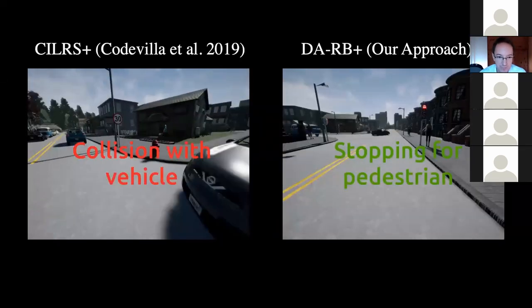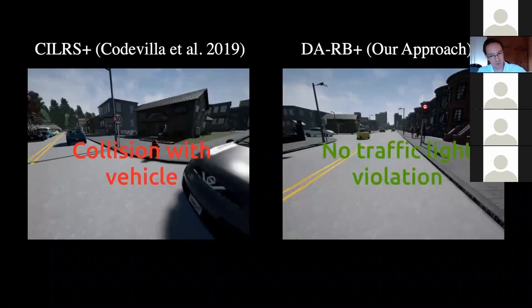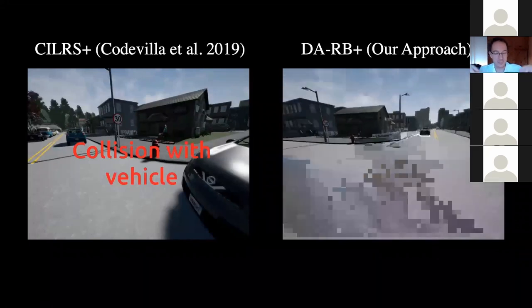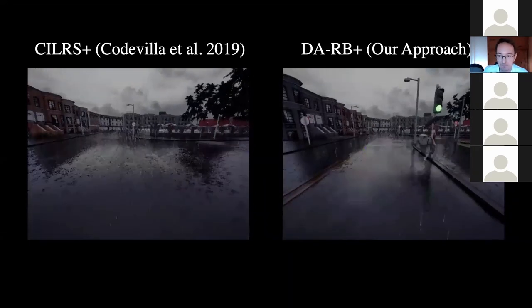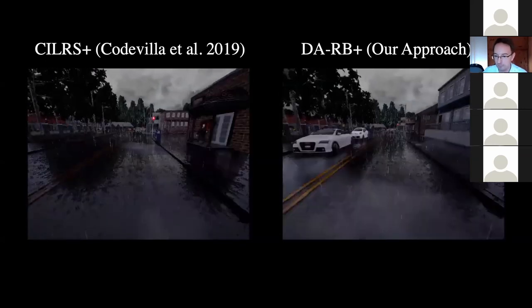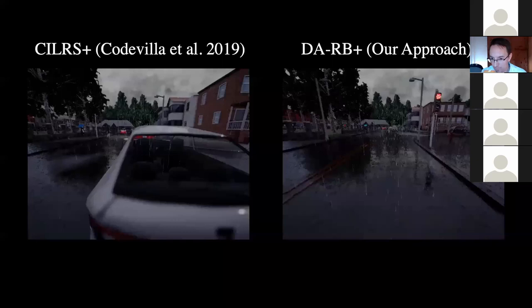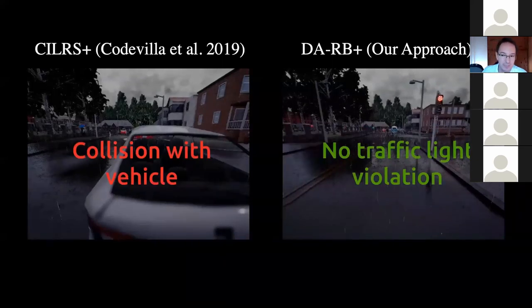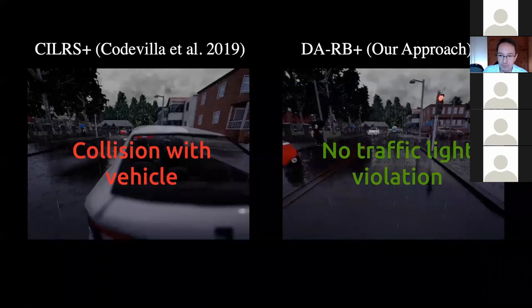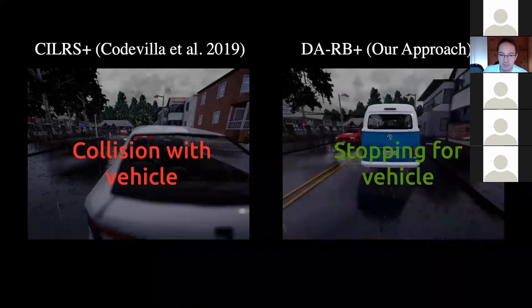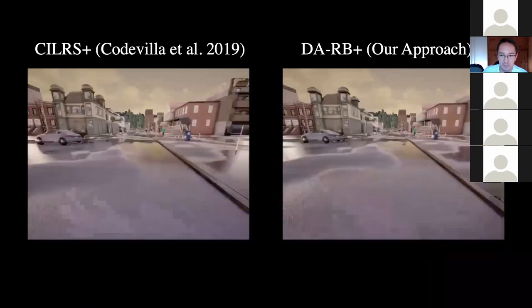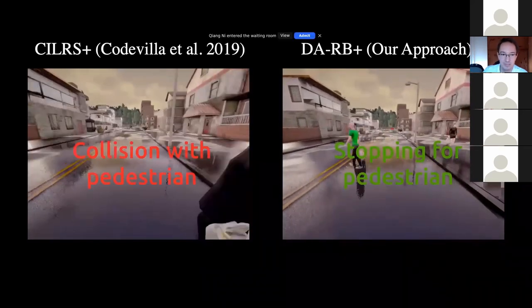Here are qualitative results comparing the baseline to our model, starting from the same location. In challenging conditions like rain and direct sunlight, this model has been trained for traffic lights and successfully handles them, crosses intersections, stops for vehicles and pedestrians. In general it is much more robust than CILRS.